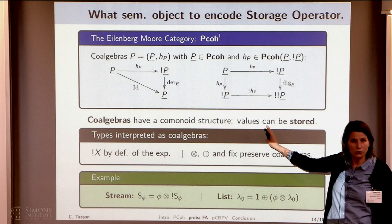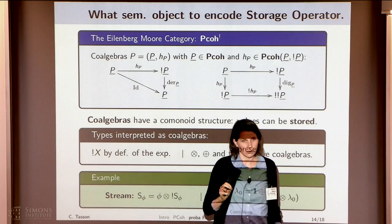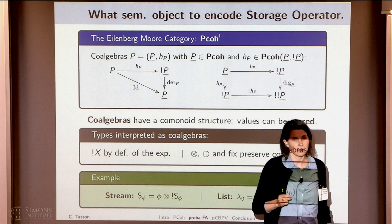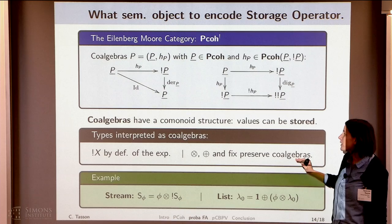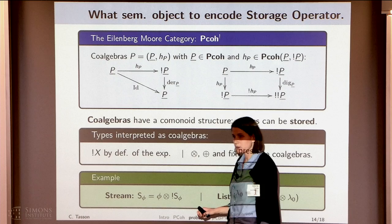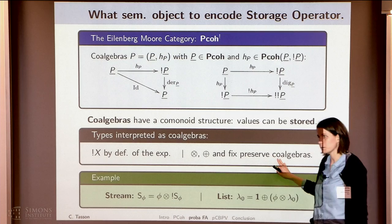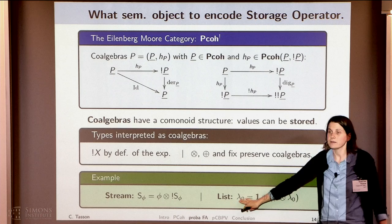We realized that co-algebras are the solution. Because when we apply the comonad bang to an object, we have a comonoidal structure. Every co-algebra on this comonad will inherit this comonoidal structure. So if we have a comonoidal structure, values can be stored. The next step was to define a class of types interpreted as co-algebras. Since bang is a comonad, bang X is a co-algebra. Co-algebras are also stable by tensor, co-product, and fixed points. So we can interpret types such as NAT, streams, lazy streams, and lists.